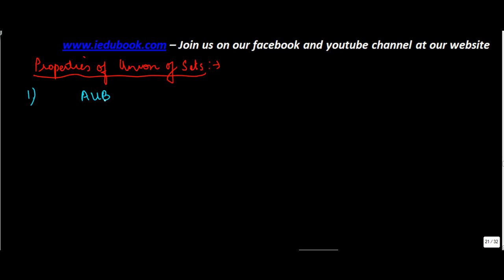This property says A union B is equal to B union A and is known as the commutative law. Now you would have seen all this in your rational numbers and everything, your addition and multiplication for integers and all. Now what does this mean?